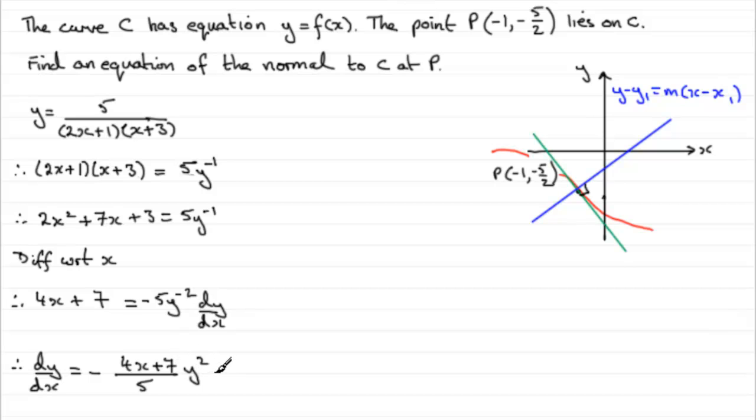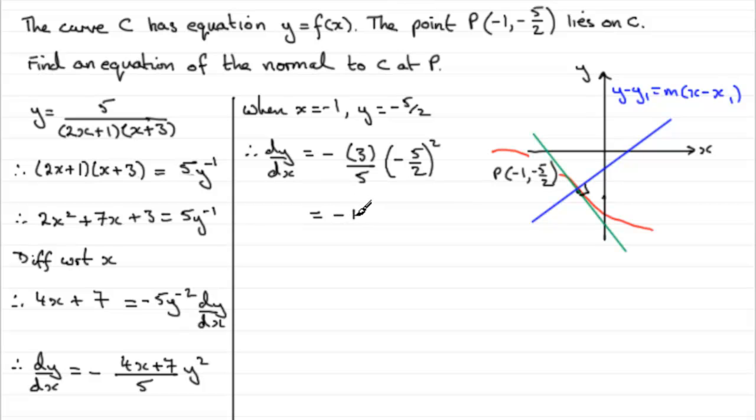So all we need to do now to get the gradient of the tangent is substitute minus 1 and minus 5 upon 2 into our equation. So let's just come down here and we'll finish this off. So we can say that when x equals minus 1, y equals minus 5 upon 2. Just substitute this into here. So therefore, dy by dx will equal minus, well, we've got 4 times minus 1, which is minus 4, plus the 7 is going to be 3. So we'll put 3 there. It's divided by the 5. And we're multiplying it by y squared. And y is minus 5 upon 2, so minus 5 upon 2 all squared. And if you work this out, you'll end up with a gradient of minus 15 over 4. So the gradient of our tangent at P is minus 15 over 4.